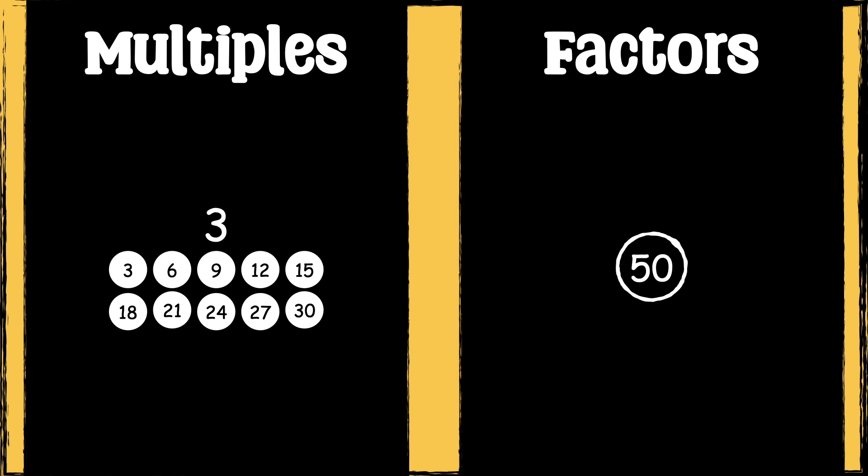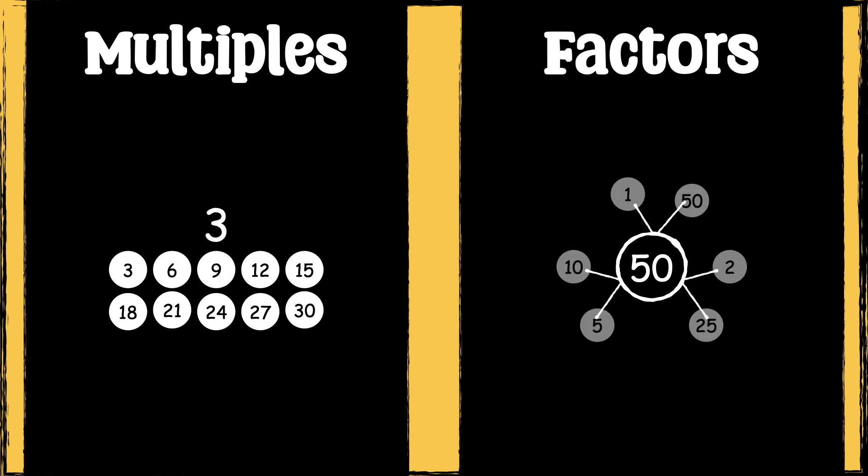For example, the factors of 50 are numbers that can be multiplied together to make 50. In essence, factors fit into a number, while multiples are made from a number.